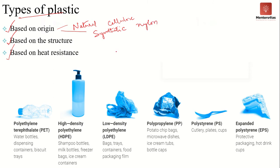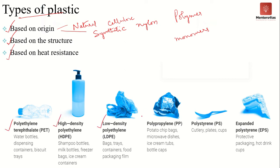Based on structure, plastic can be classified into many types. Plastic is a polymer — a repetition of certain monomer structures. Based on the structure of monomers that these polymers are made from, plastic can be classified into polyesters, polyethenes, polyurethanes, and others. Based on structure, the durability and strength of plastic actually varies.